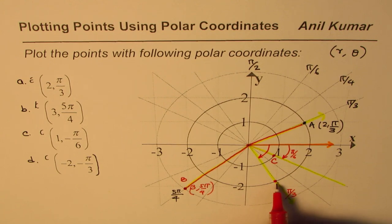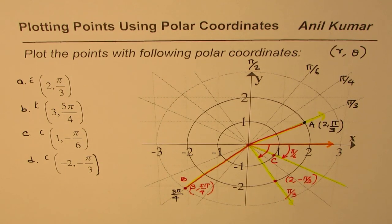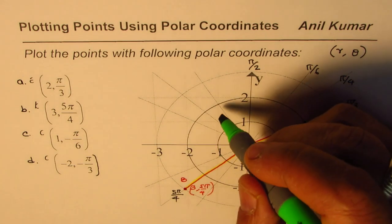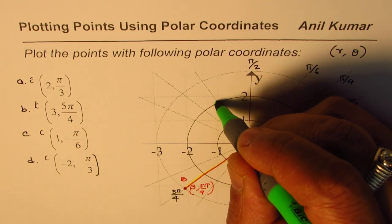So this point here is actually (2, -π/3). Now how do we get -2? So for -2 you have to reflect it about the pole.